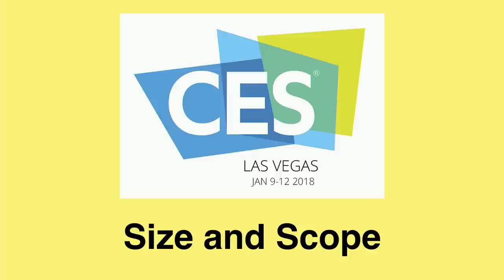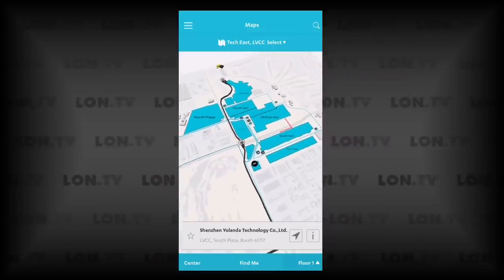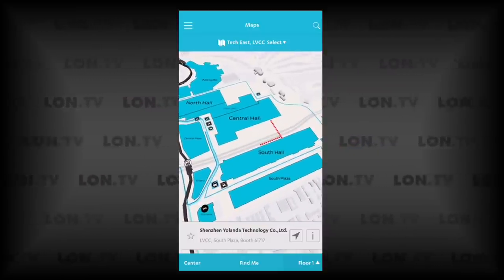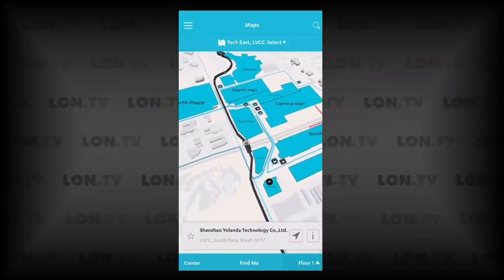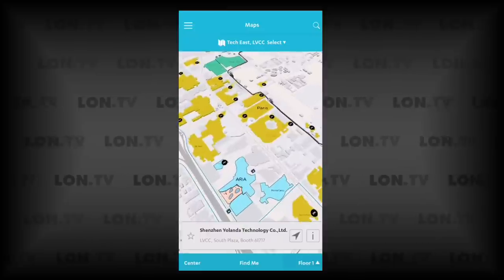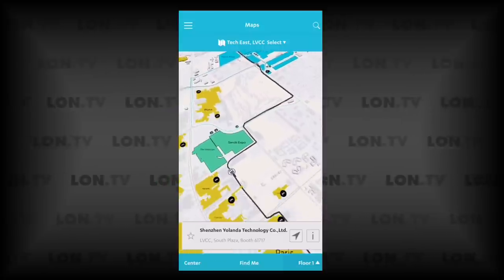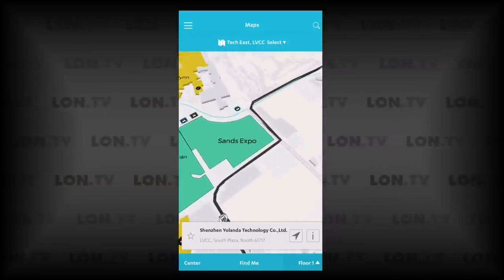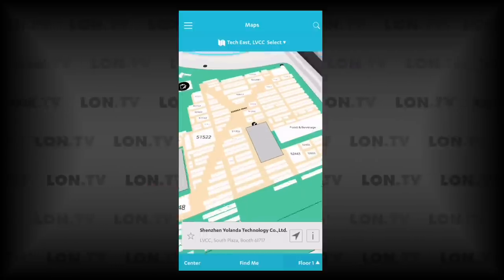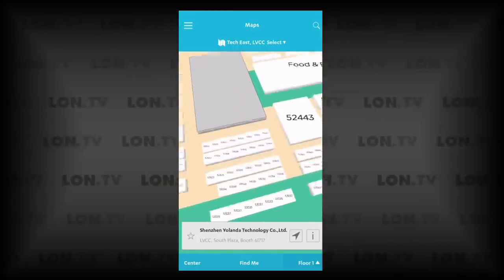Now the size and scope of CES is pretty crazy. I'm going to pull up the app here that you use to navigate around the show. And what you're seeing here is just the Las Vegas Convention Center. CES not only takes up all of this space, it also takes up all of this space across Las Vegas. And these yellow areas are the official CES hotels. So just to give you an idea of the scope of this thing, the Sands Expo Center is where we covered a lot of the startups in the Eureka Sands area. And this is what took the entire day to cover because we want to go down every one of these aisles and see every one of these companies.